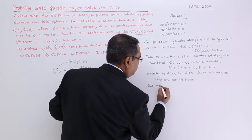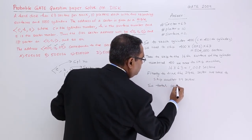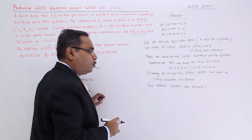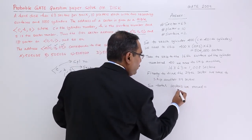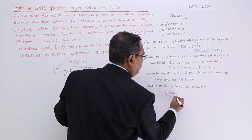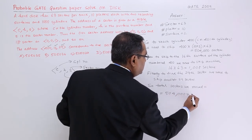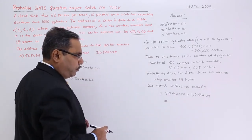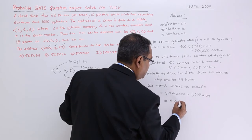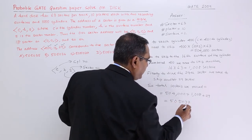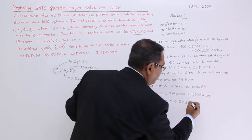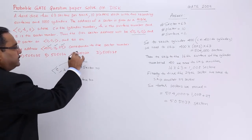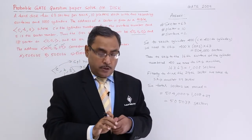To find the 29th sector, we need to skip another 29 sectors. The total number of sectors moved will be equal to 504,000 plus 1008 plus 29, which comes to 505,037 sectors. This is the answer.